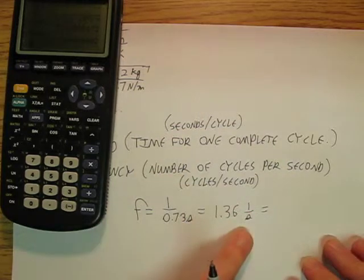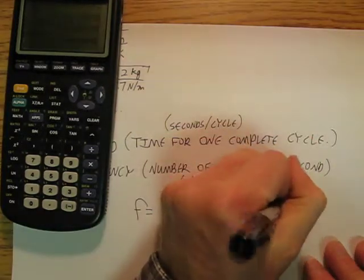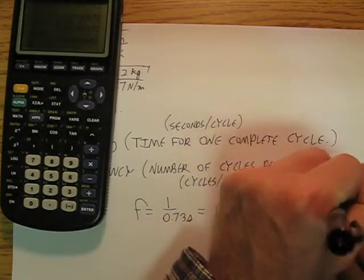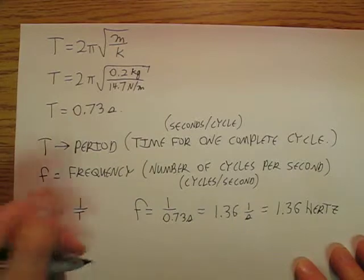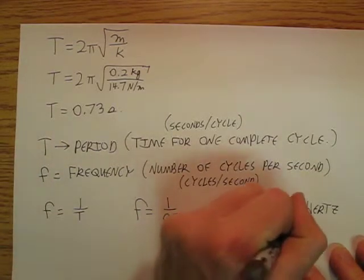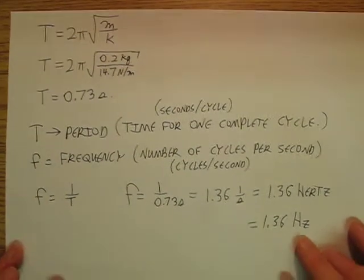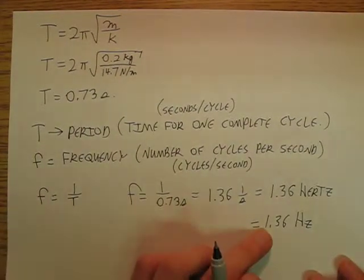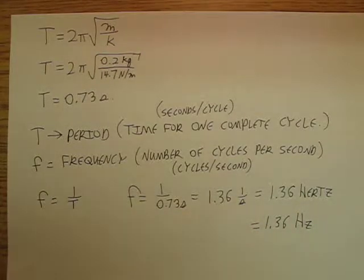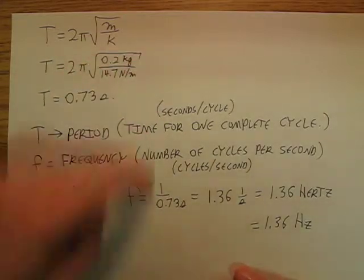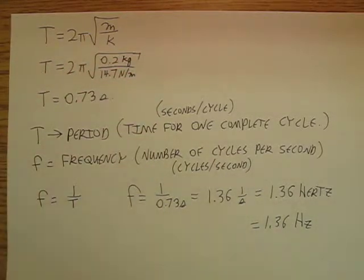We're going to take the unit 1 over seconds and name it after Heinrich Hertz. So we say 1.36 Hz — Hertz. Basically, that means that thing is going to bob up and down 1.36 times every second — it'll go through 1.36 complete cycles every second.